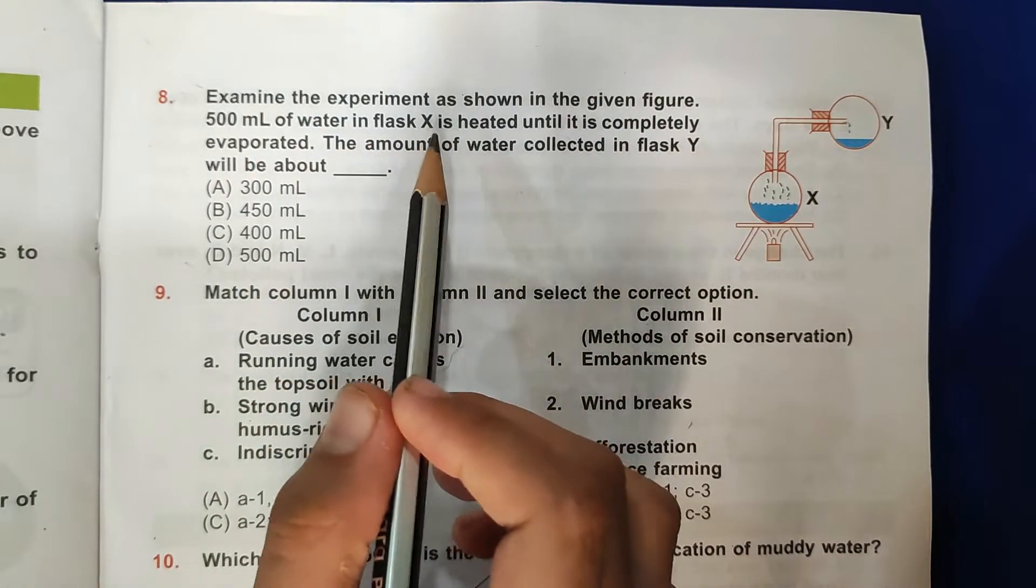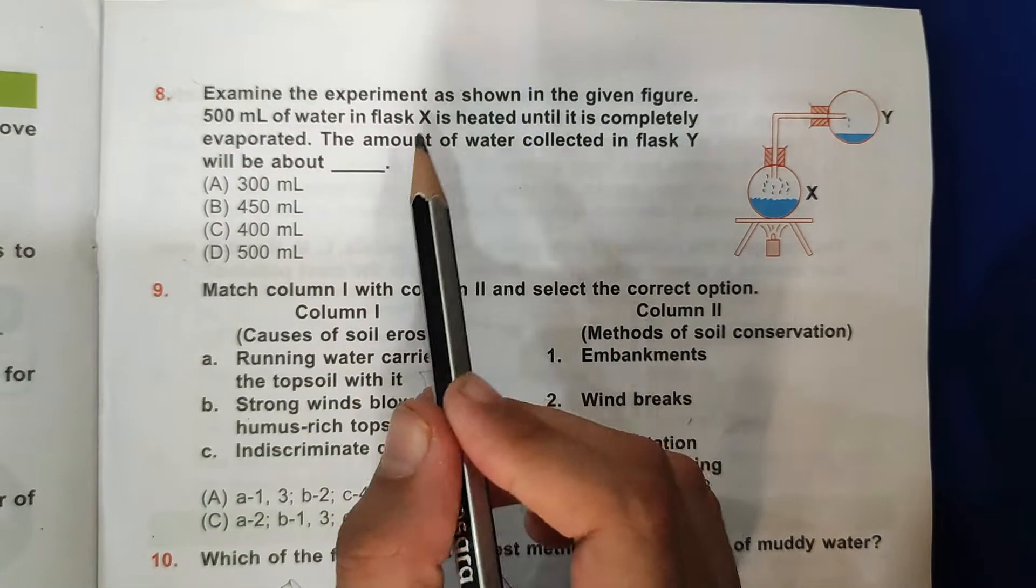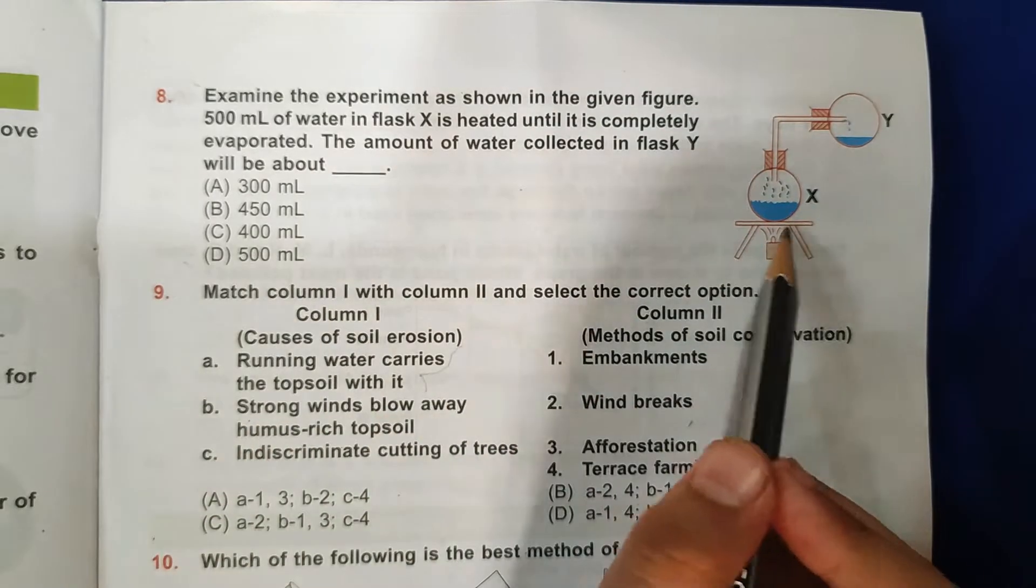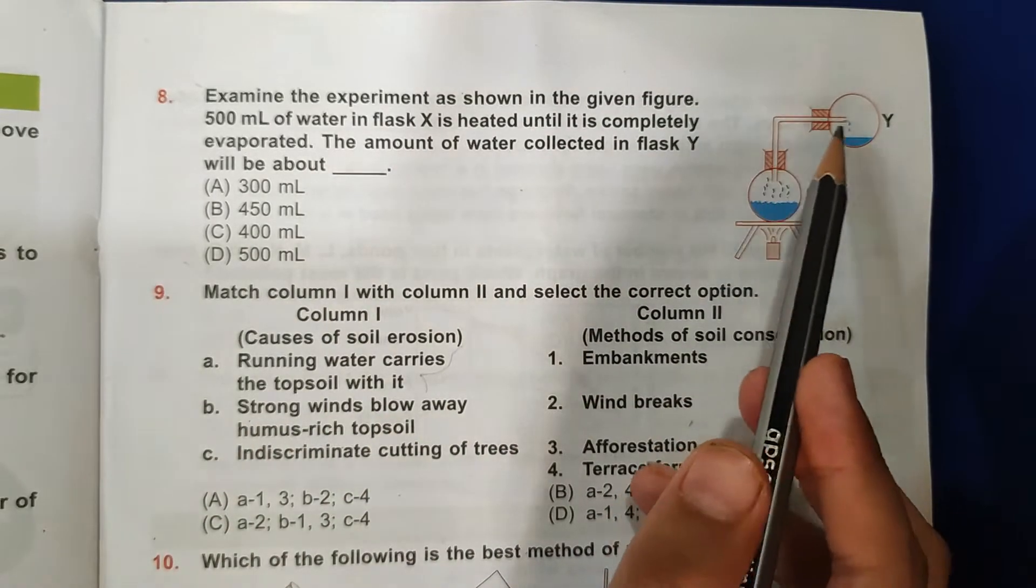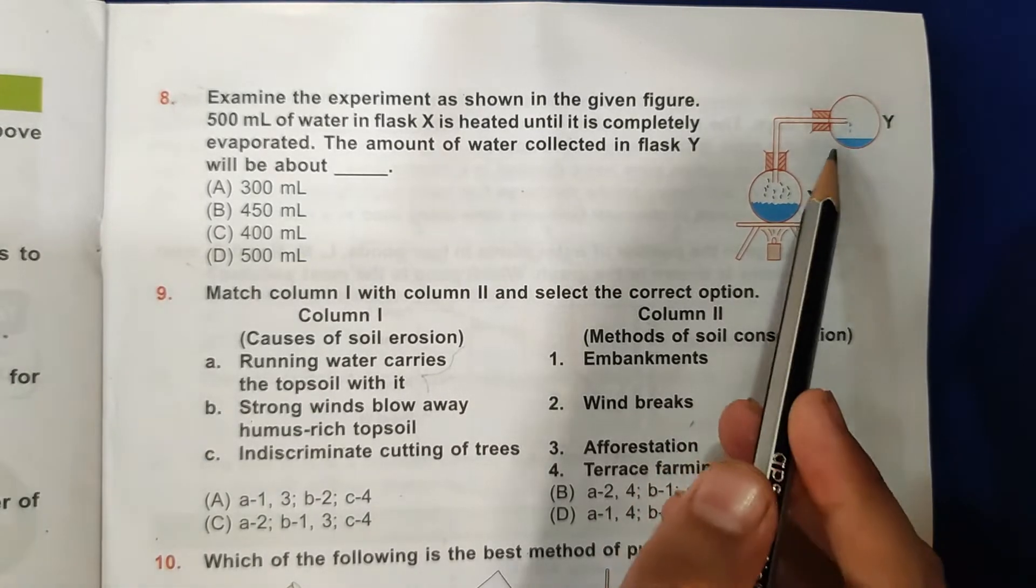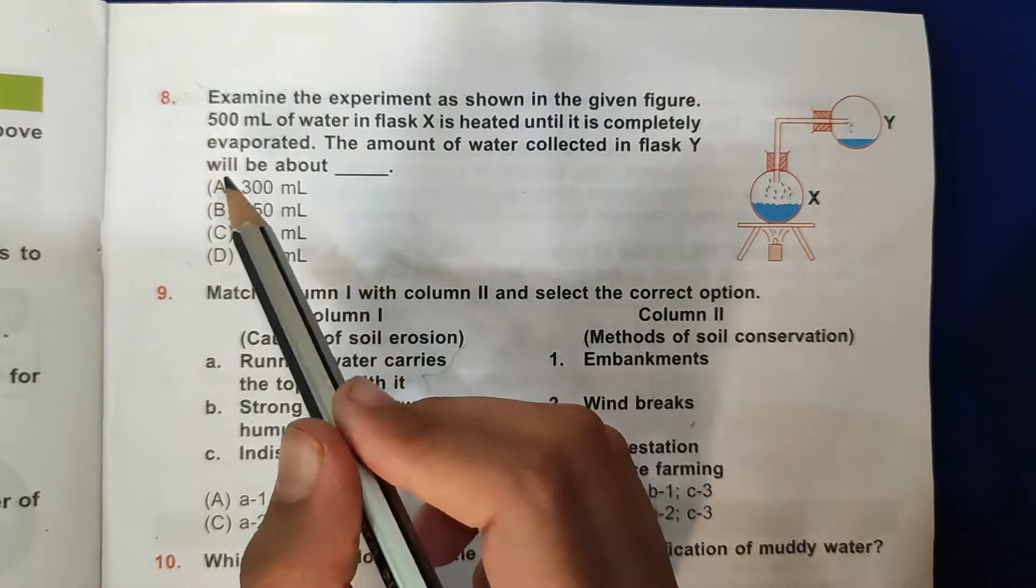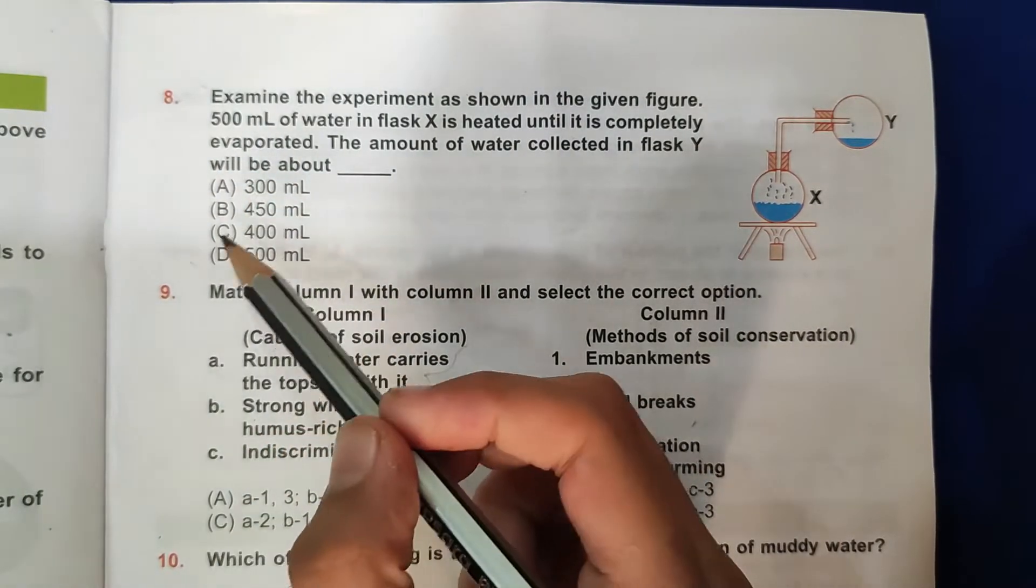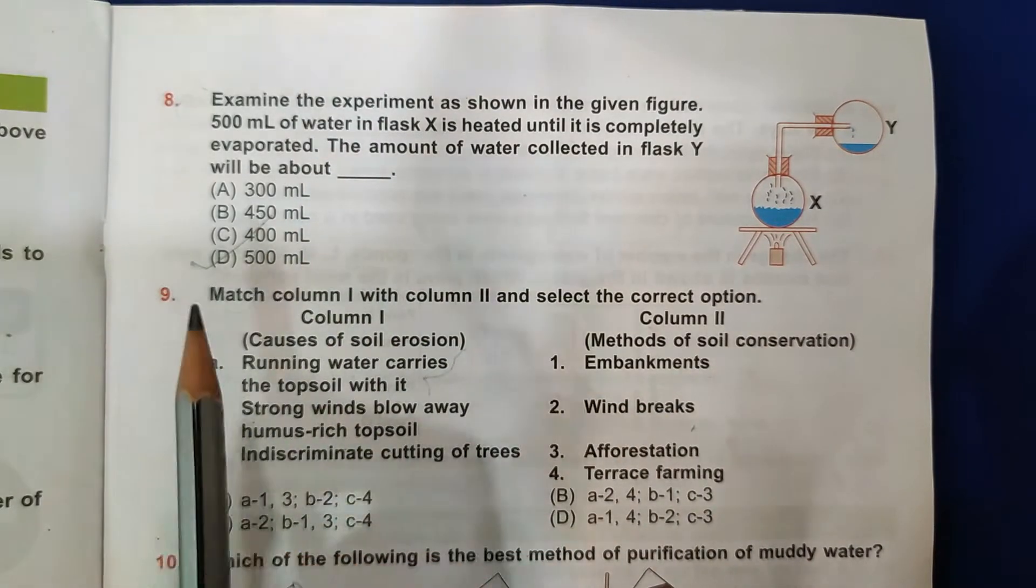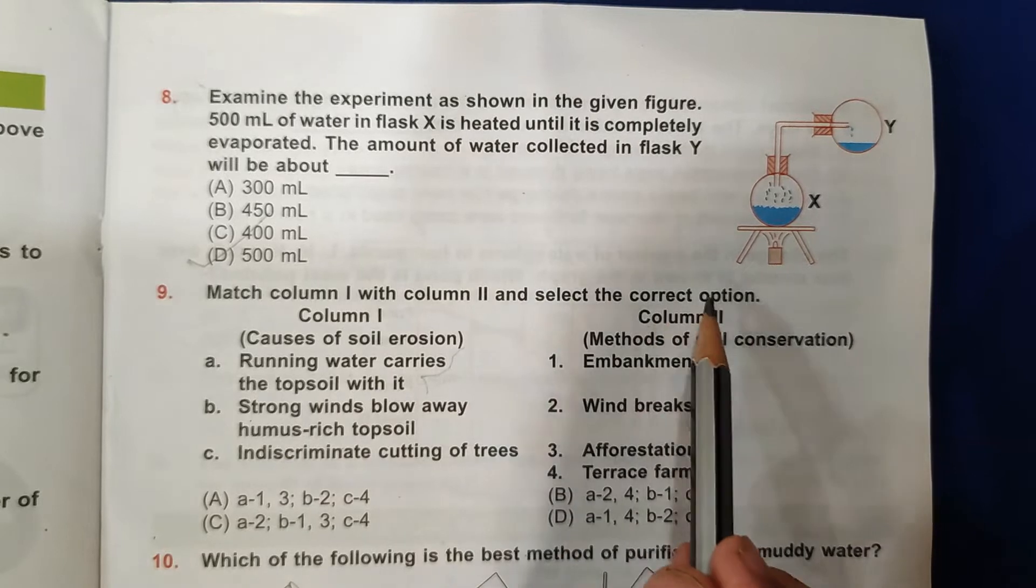Eighth question: Examine the experiment as shown in the given figure. 500 ml of water in flask X is heated until it is completely evaporated. The amount of water collected in flask Y will be about blank. So here the water is evaporating, and when it is going in flask Y, here the condensation is happening. Means all the water will go there, means it will be about 500 ml, so D is the correct answer.